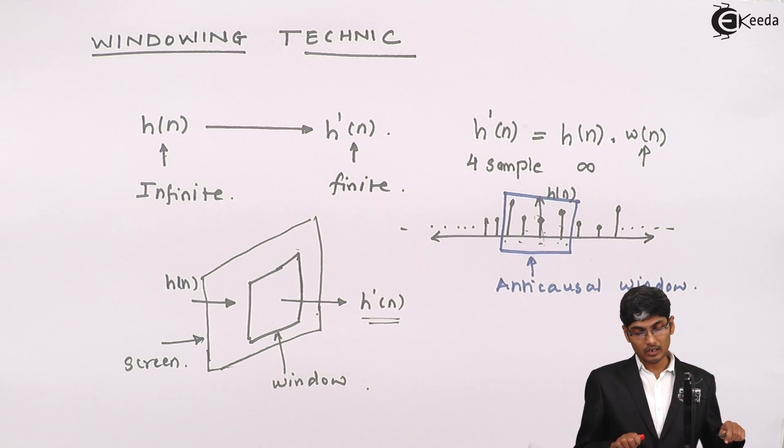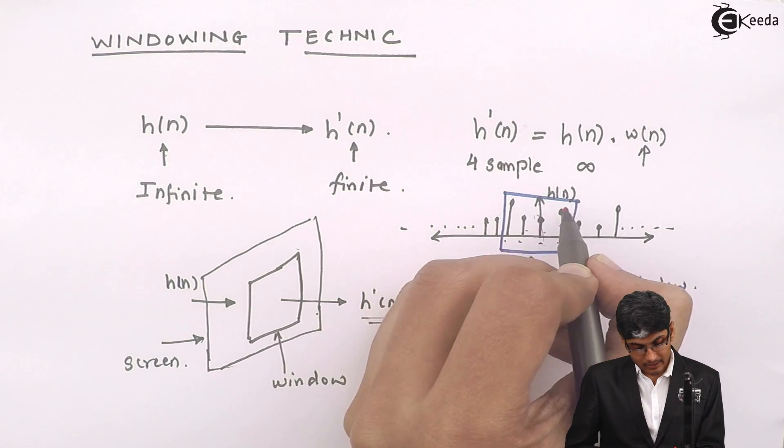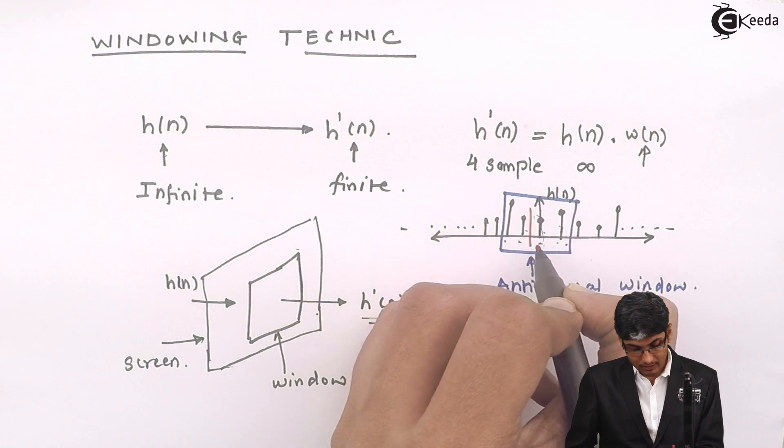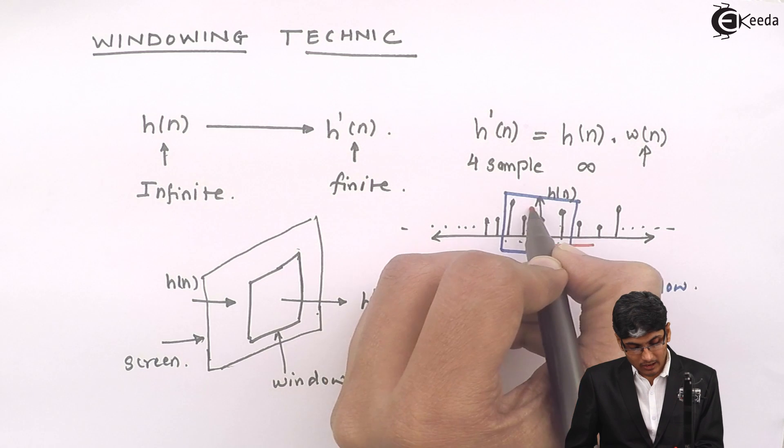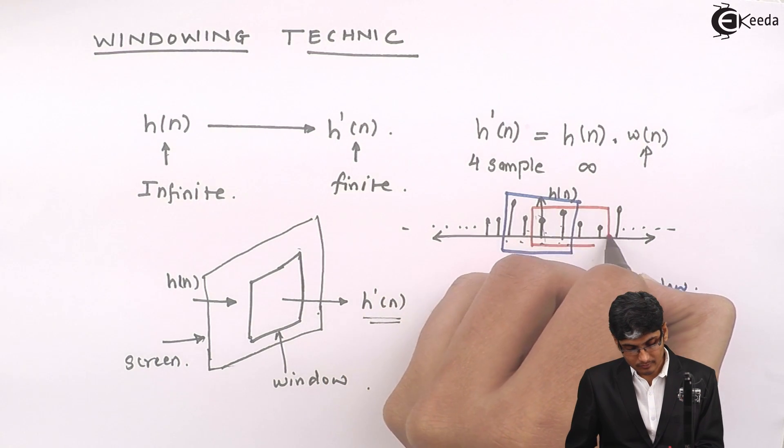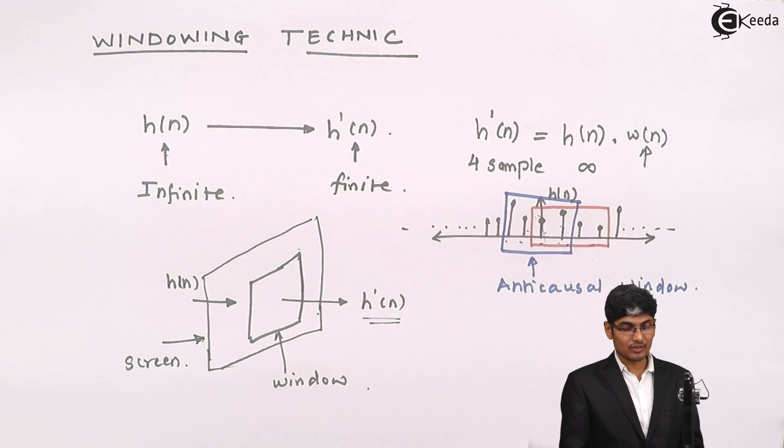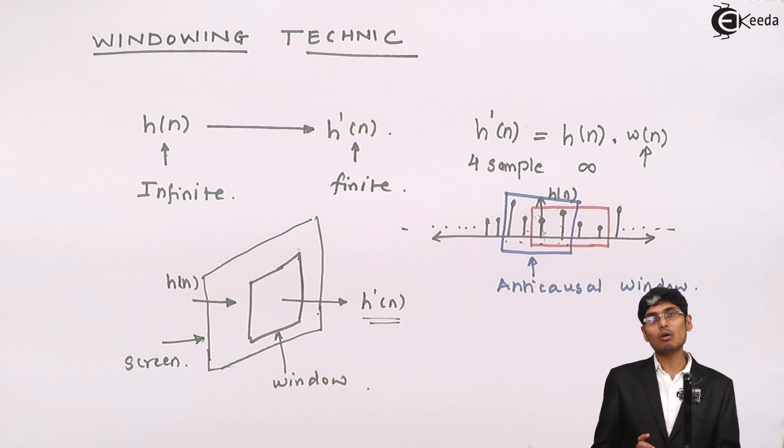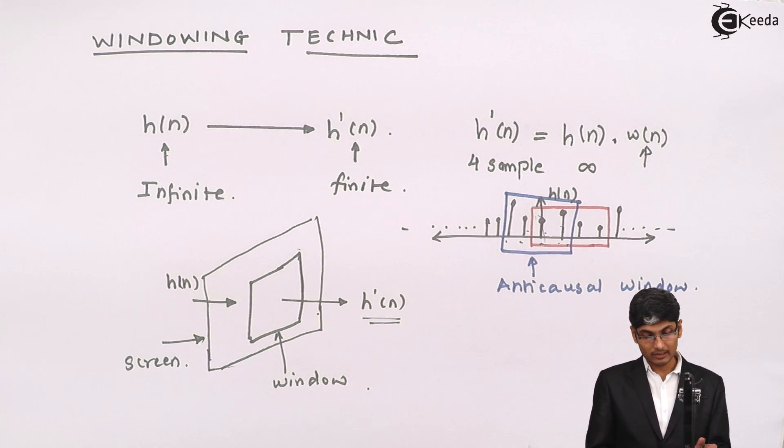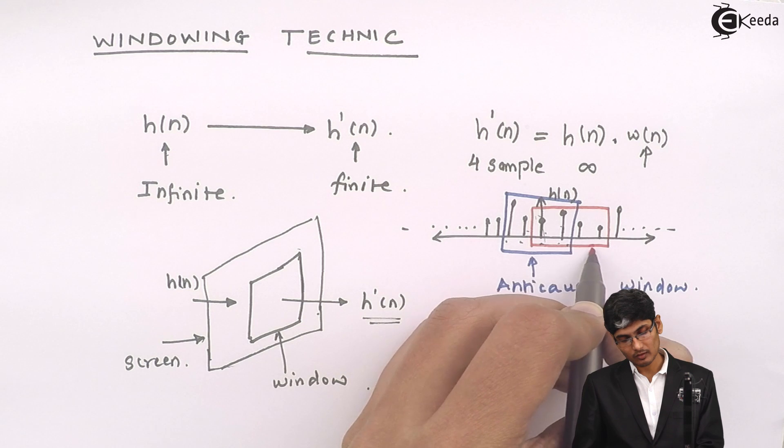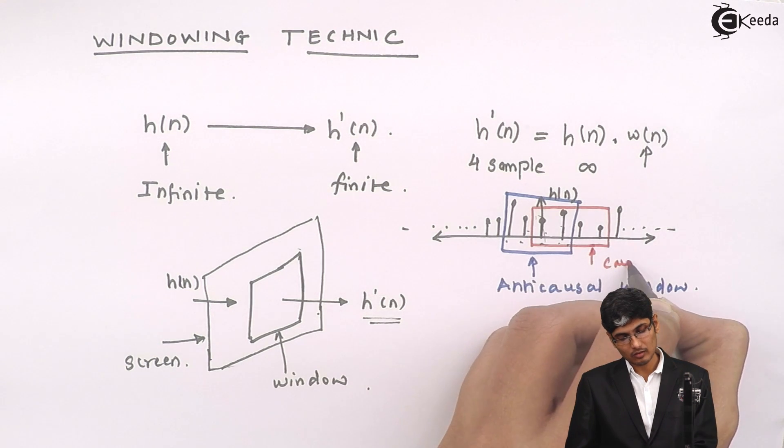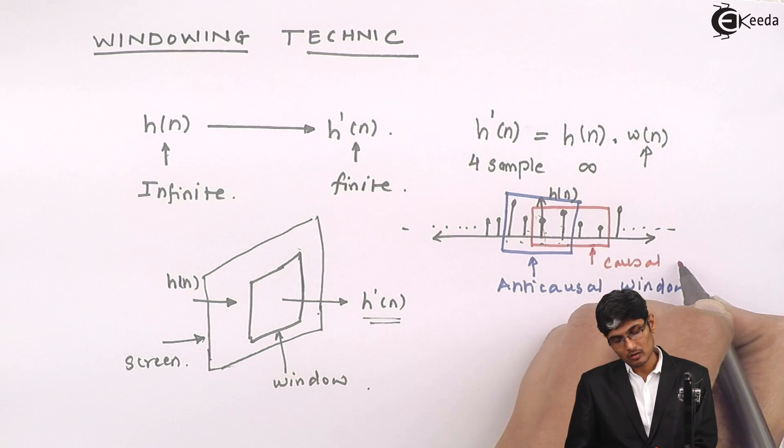And if suppose I collect 4 samples but the red curves, that means here the n will take all positive values, this window is called as causal window.